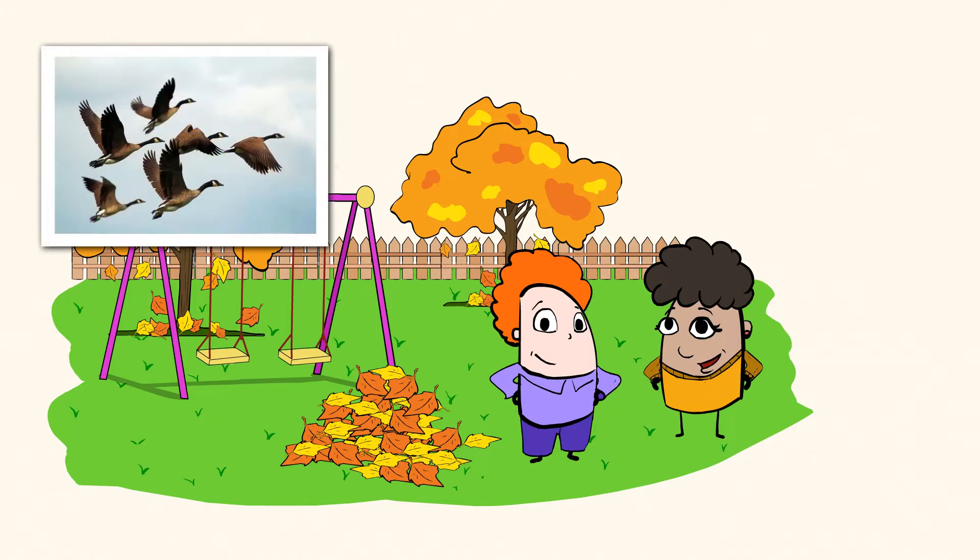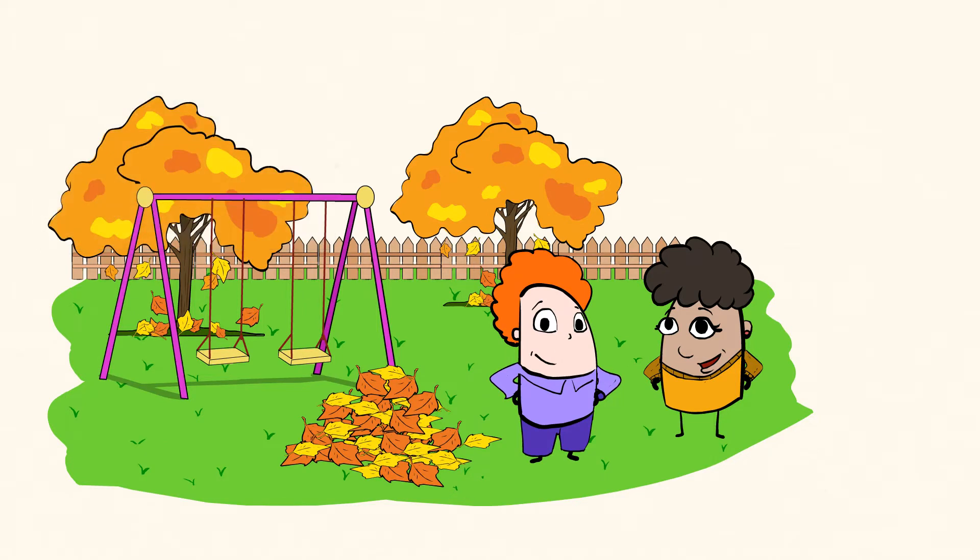Look at that. Those geese are flying south to find warmer weather. They do this every year when it gets cold. When animals travel long distances from one place to another, it's called migration. Cooler weather, birds flying south, leaves changing colors - this must be the fall or autumn season.